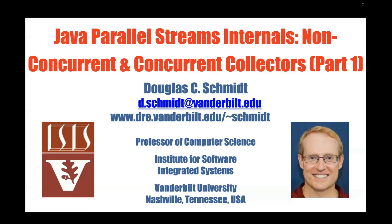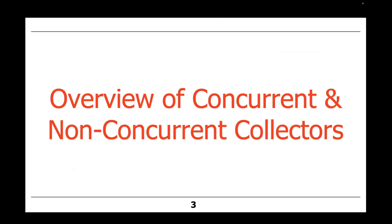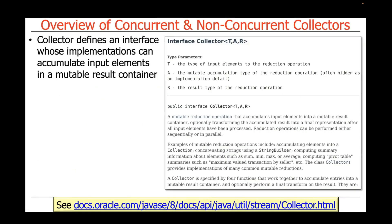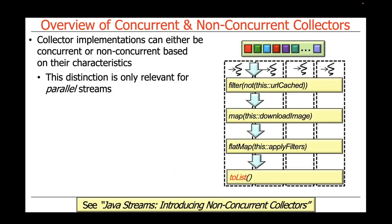We're now going to talk about non-concurrent and concurrent collectors and introduce the differences between them. A collector is an interface that can be used to accumulate input elements into a mutable result container. These implementations can either be concurrent or non-concurrent based on the various characteristics that they define.